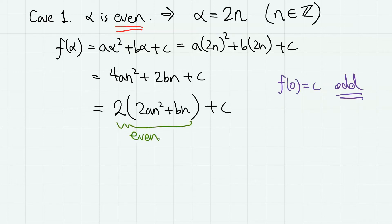So this part is even, but since c is given as f(0) and therefore odd, this part is odd, which makes f(alpha) also being odd.